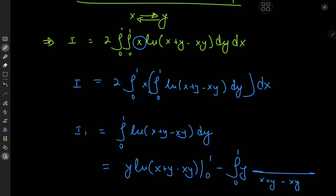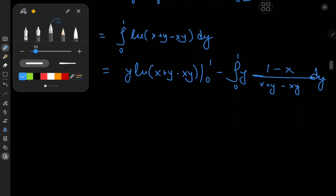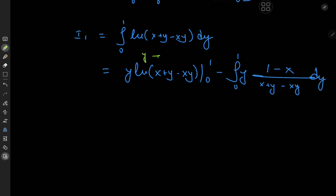For the numerator, by the chain rule, we have 1 minus x. Now to evaluate the first term at the limits as y approaches 0 and 1. As y approaches 0, it's a no-brainer — you get a 0. But as y approaches 1, we get logarithm of x plus 1 minus x. So the x's cancel out and we have log 1, which is 0.